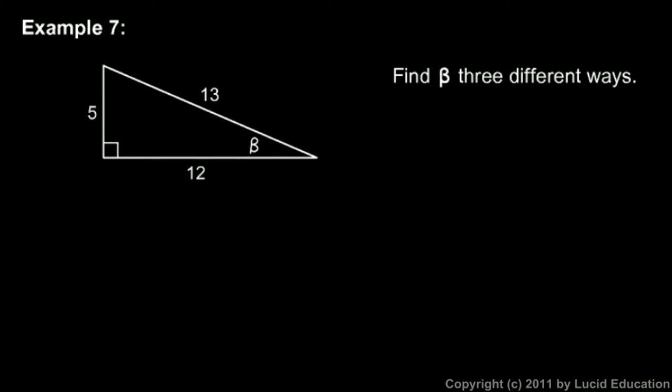Example seven. We're given a diagram. You see a 5, 12, 13 right triangle, and angle beta is marked here, one of the acute angles. And we're told to find beta three different ways.